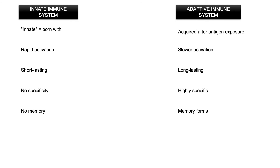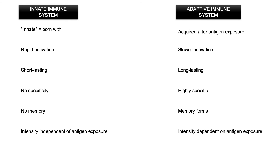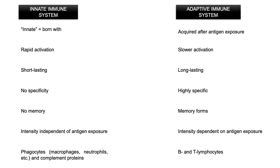Innate immunity's degree or intensity of response is completely independent of antigen exposure. In contrast, adaptive immunity's intensity is directly proportional and thus dependent on antigen exposure — so the more the adaptive immunity is exposed to an antigen, the stronger the immune response that is mounted. Innate immunity depends on various phagocytes and complement proteins, while adaptive immunity centers around B and T lymphocytes. We can discuss these cells and proteins in detail in subsequent videos.